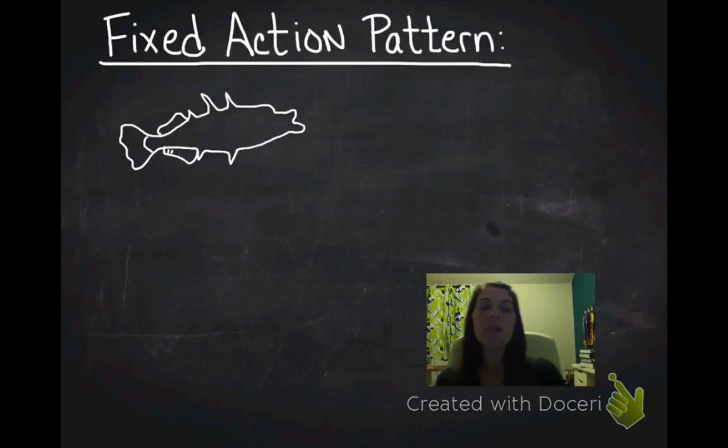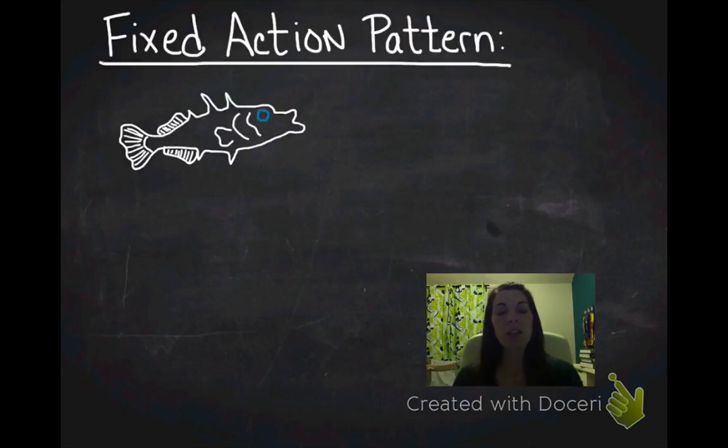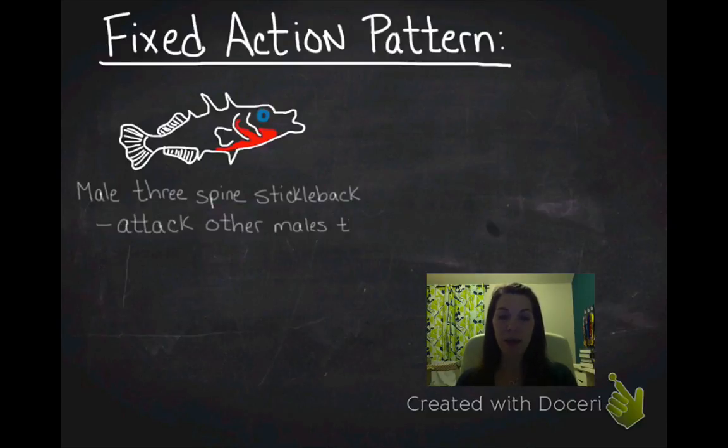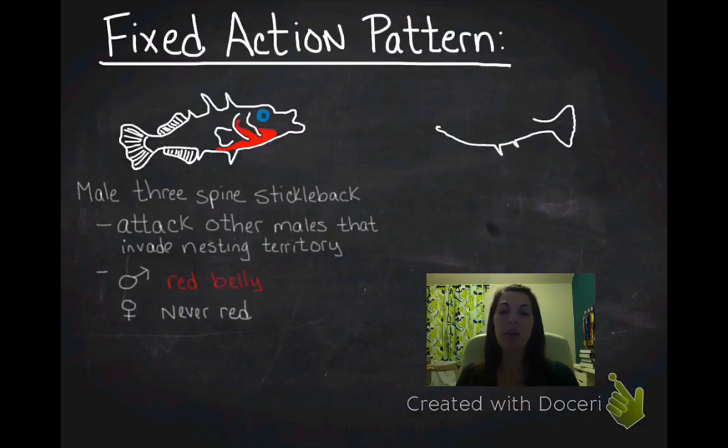So, I'm going to use the model organism of the three-spine stickleback fish. So, this is my drawing of a three-spine stickleback. And this is a male three-spine stickleback. And you can tell it's a male because they have a red belly. And male sticklebacks attack other males that invade their nesting territory. And this is a very characteristic behavior. You see it in nature, you see it if you have them in the laboratory. It's just a very clear-cut, observable behavior. And what they noticed is that males have a red belly and females never have a red belly. And so, what that means is that that red belly probably has something to do with it.